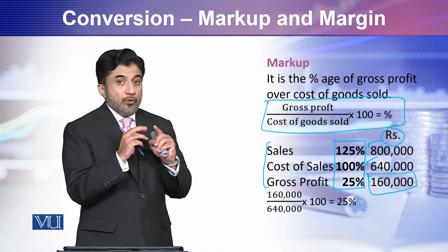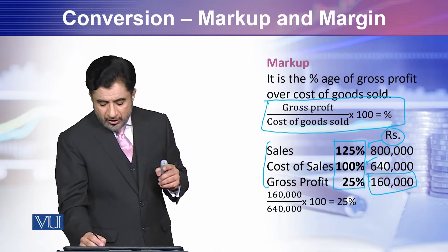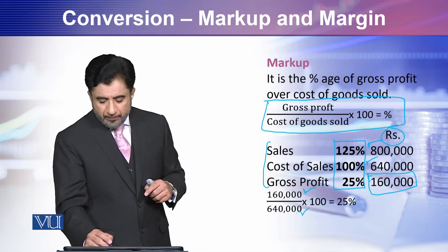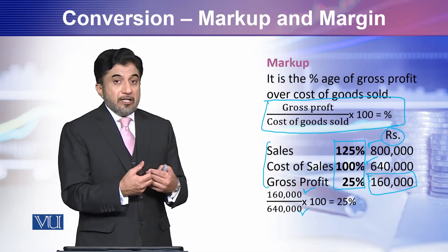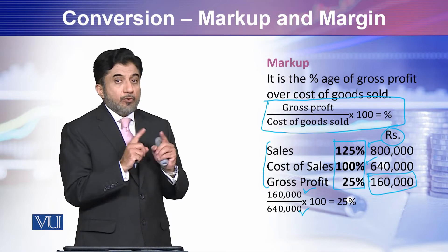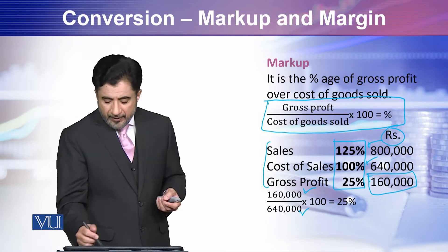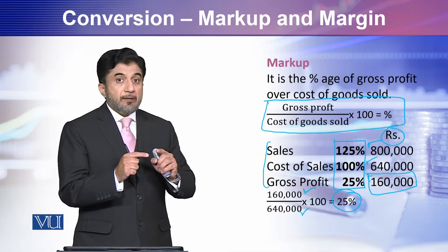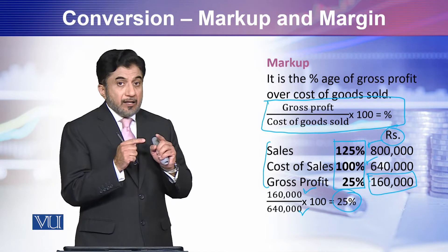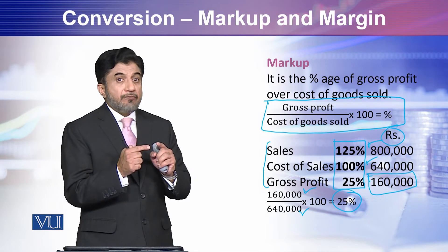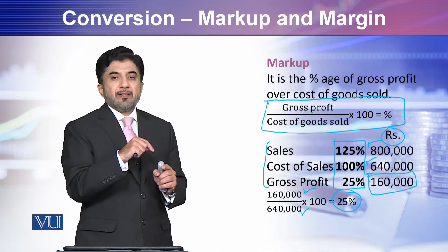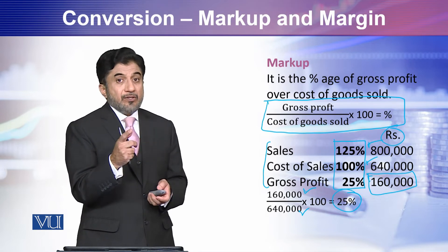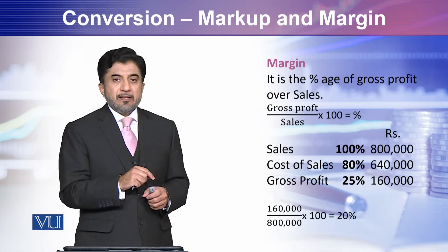Now calculate: the percentage of Gross Profit, which is 160,000, over Cost of Goods Sold, which is 640,000. When we calculate in percentage, we multiply by 100, and that comes to 25%. So Gross Profit is 25% of Cost of Goods Sold — this is your markup.